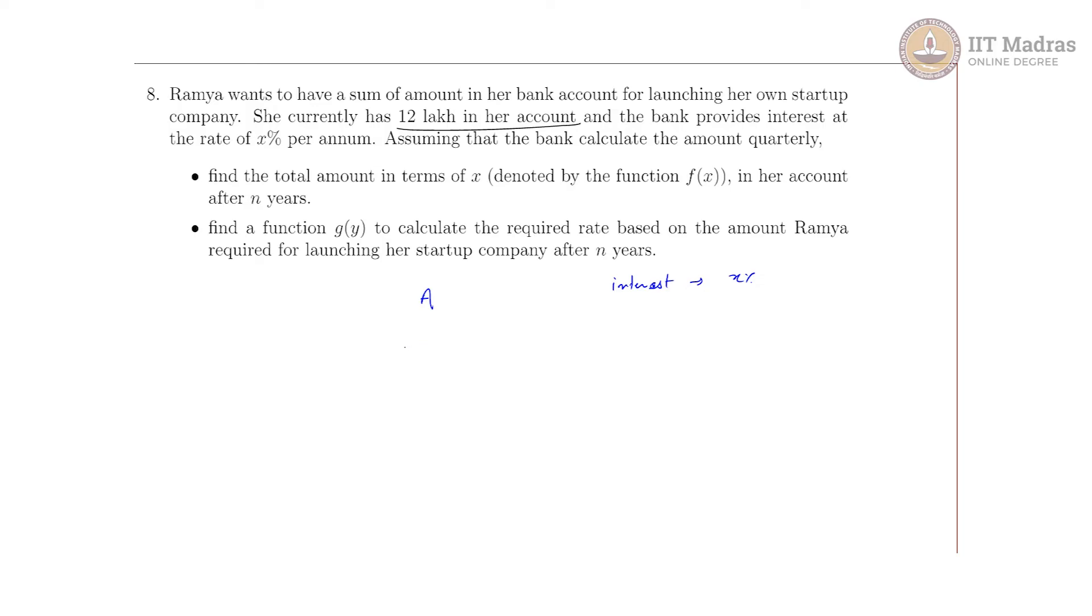The total amount P in her account after time n is represented as the amount A times 1 plus rate. Rate is what? Quarterly rate, because we are getting spread by quarterly rate. And how many years? N years. So we know that 1 year has 4 quarters, so n years will have 4n quarters.